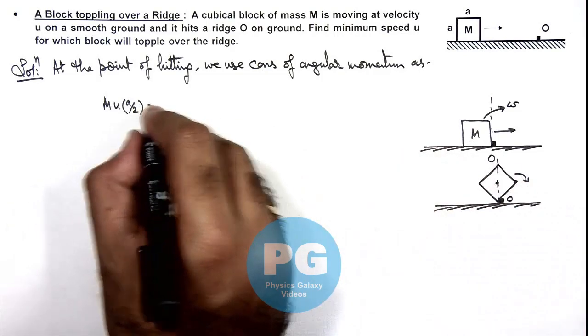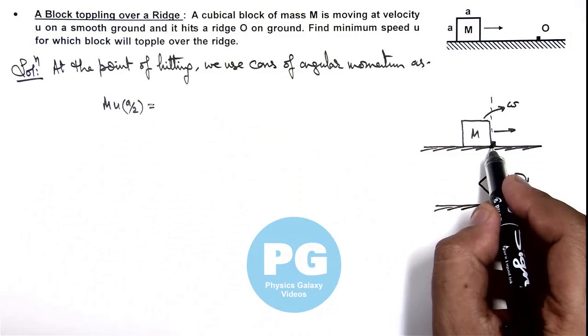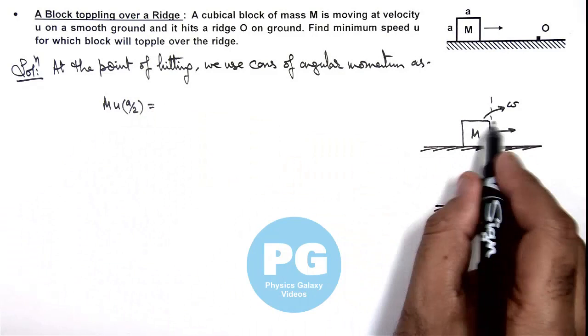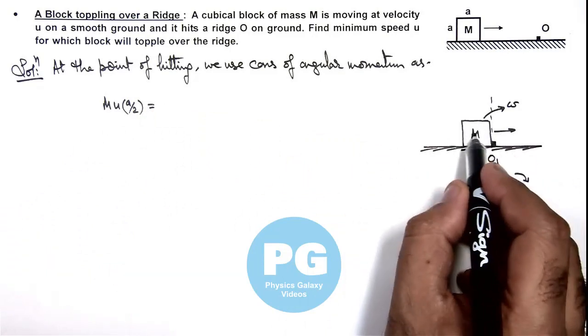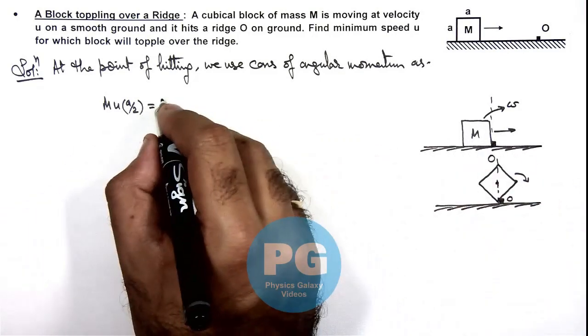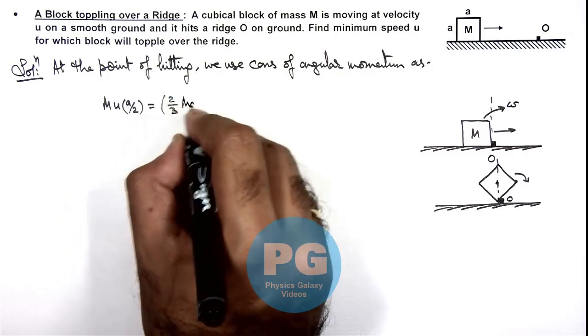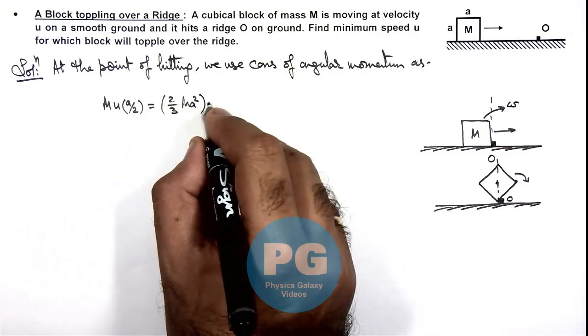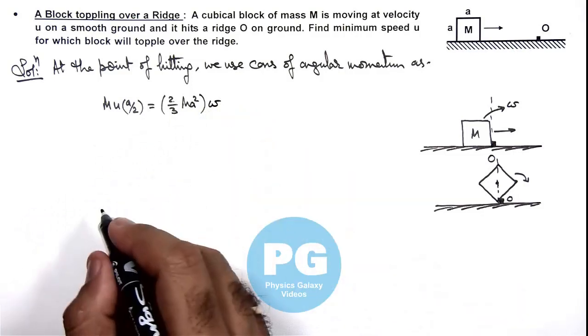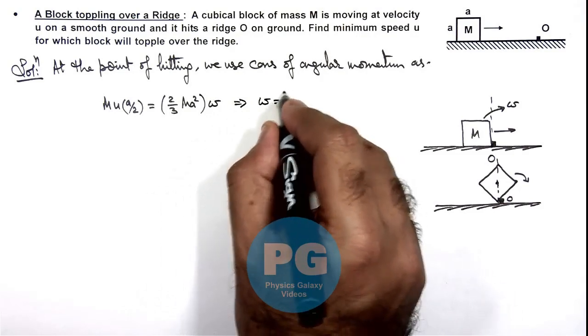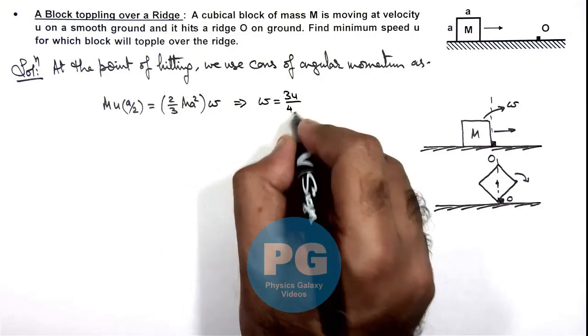And after collision, this starts rotating about point O. So its moment of inertia we can write for a cubical block about a diagonal, its moment of inertia we can write as 2/3 M a² multiplied by the angular speed omega. So this gives us the value of angular speed just after collision, that is 3u/4a.